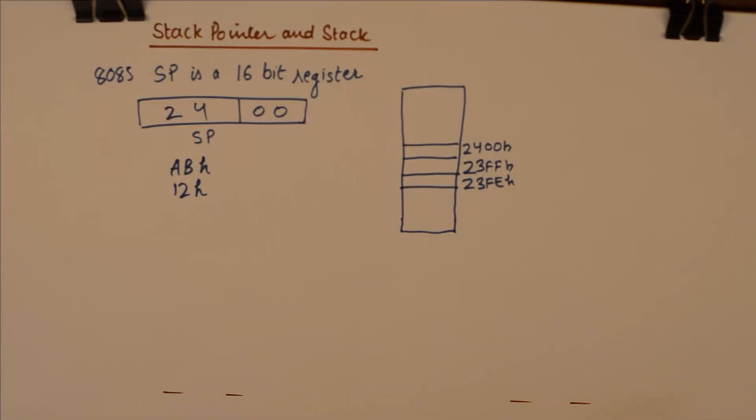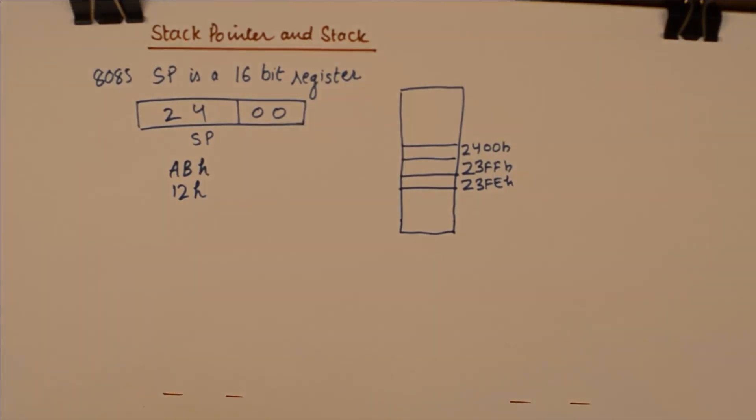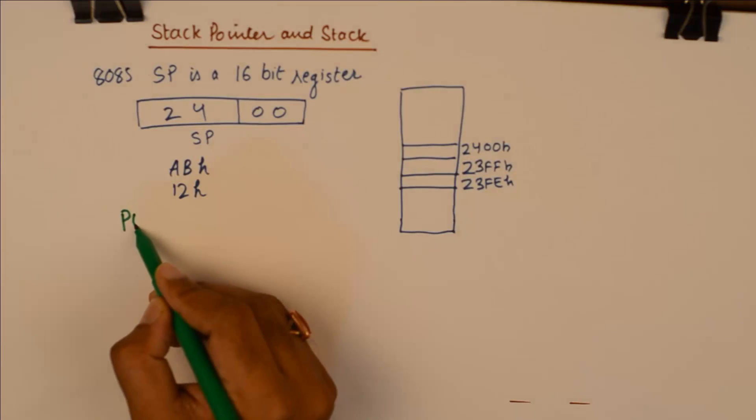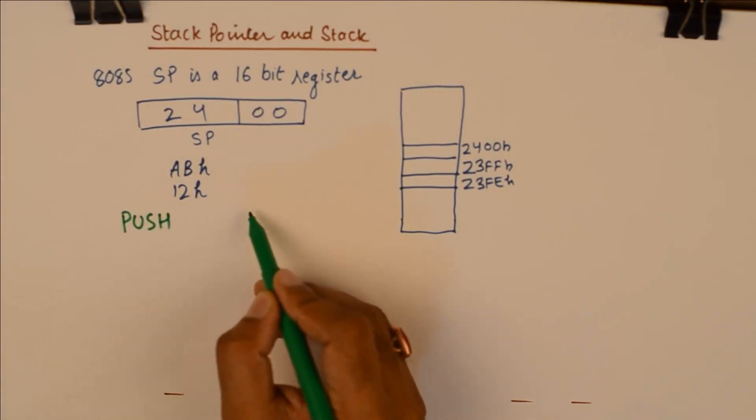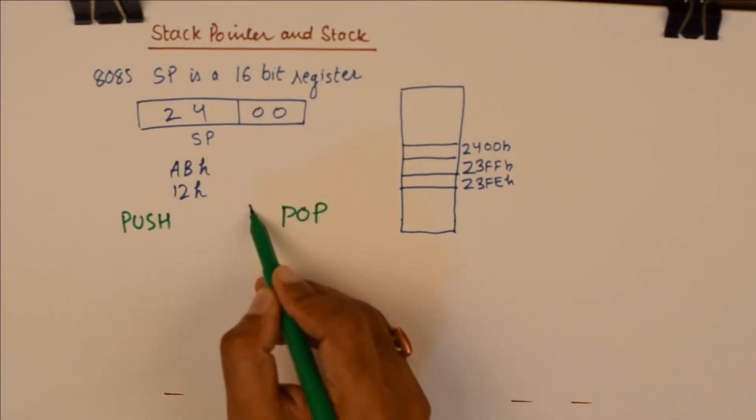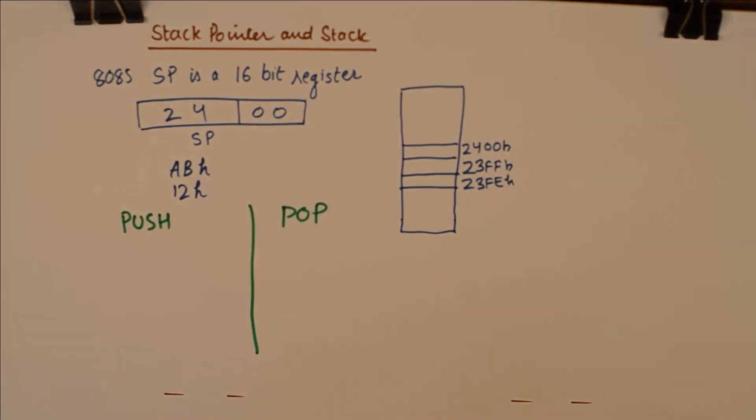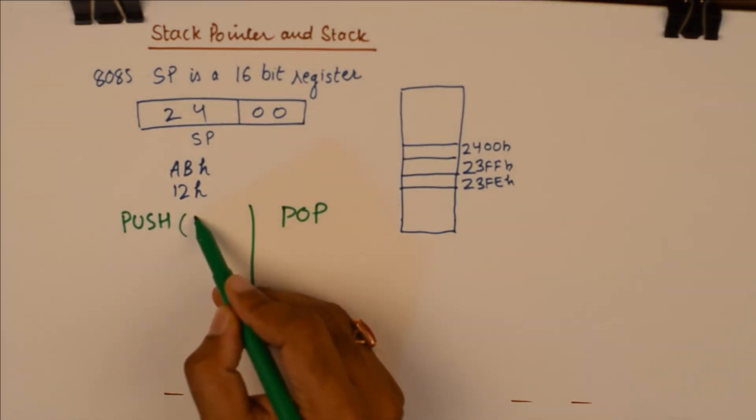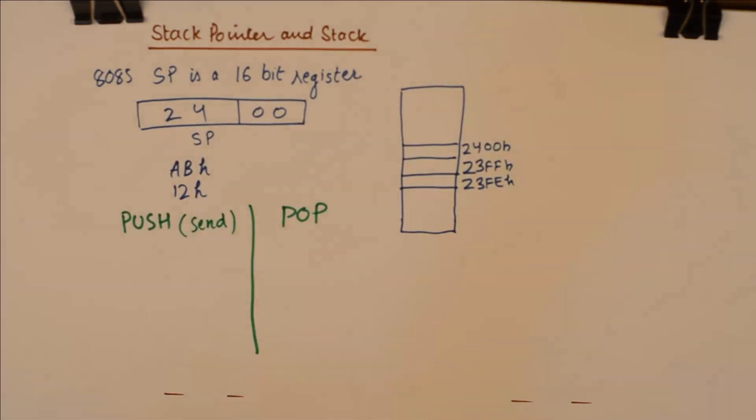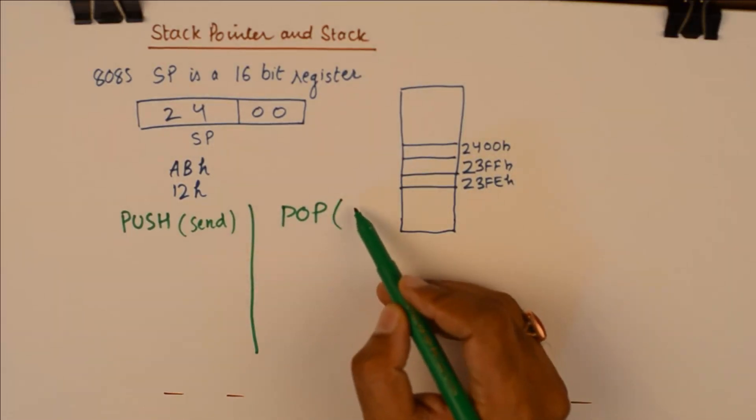But there are two most important instructions which work in conjunction with the stack area and those two instructions are very important. Push and pop. So if you wish to send something to stack you will need to use the instruction push, and if you wish to bring something back from the stack which is the temporary area of course then we will use pop.